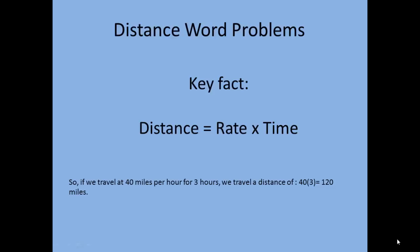This is a video on solving distance word problems. When we're talking about distance word problems, we keep in mind that key fact that distance is equal to the rate times the time. For example, if we travel at 40 miles per hour for three hours, how far did we go? We traveled a distance of 40 times 3, which gave us 120 miles. Distance equals rate times time — this will be important when we solve these types of problems.